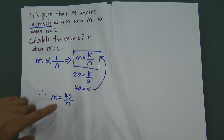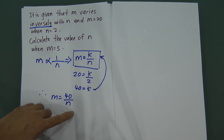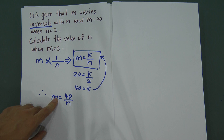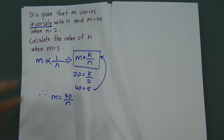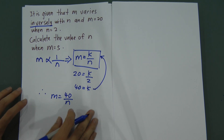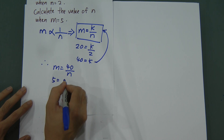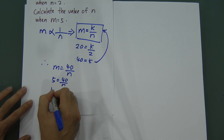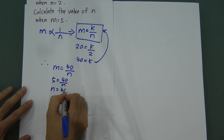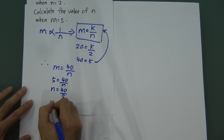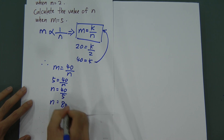The question asks you to calculate the value of n when m = 5. Substitute m = 5 into m = 40/n: 5 = 40/n, so n = 40 ÷ 5, therefore n = 8.